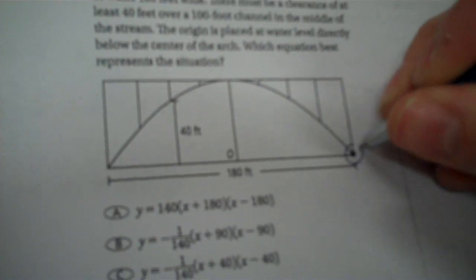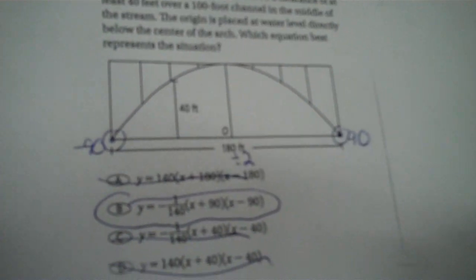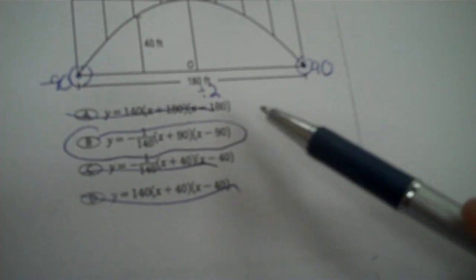A bridge supported by a parabolic arch spans a stream of water 180 feet wide. There must be a clearance of at least 40 feet over a 100-foot channel in the middle. The origin is placed at water level directly below the center of the arch. Which equation best represents the situation? You have zero in the middle; from here to here is 180. Divide 180 by 2 — it's 90. So it's positive 90 and negative 90 as the X intercepts. What equation has plus 90 and minus 90? Probably part B.